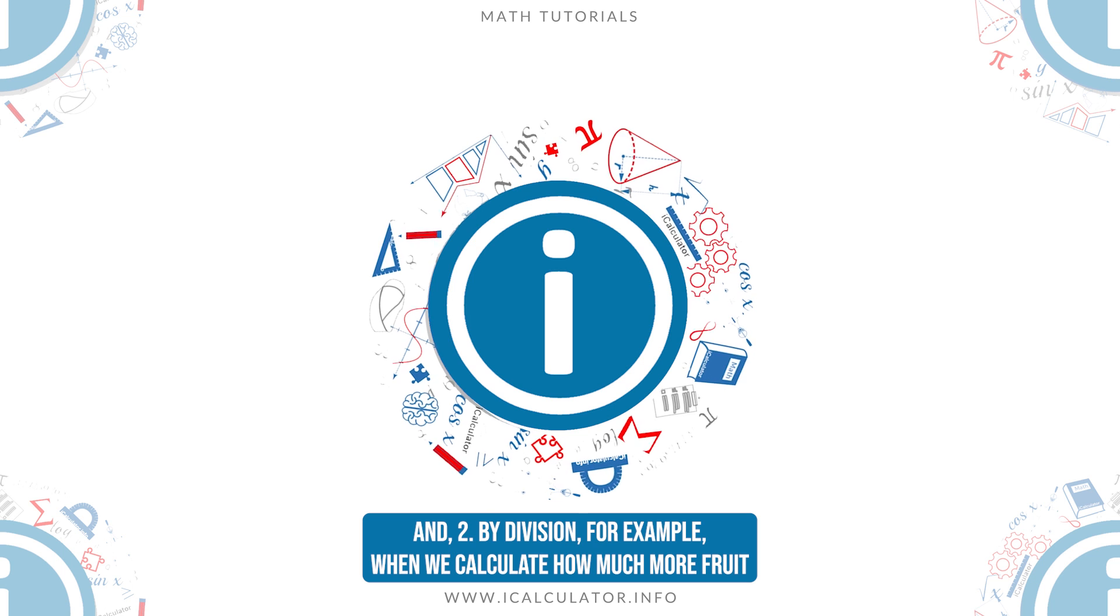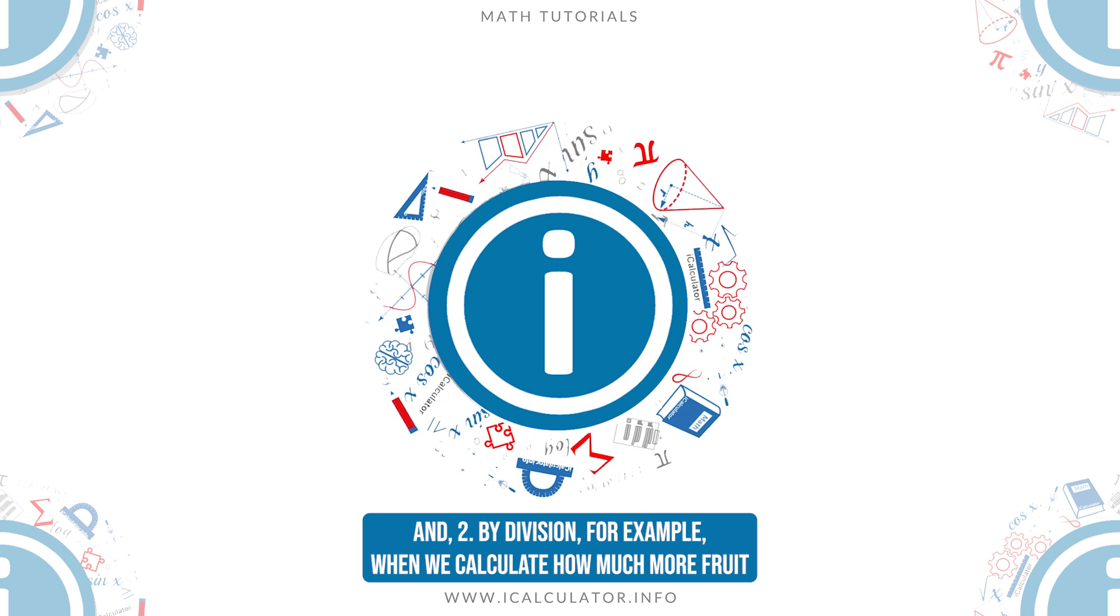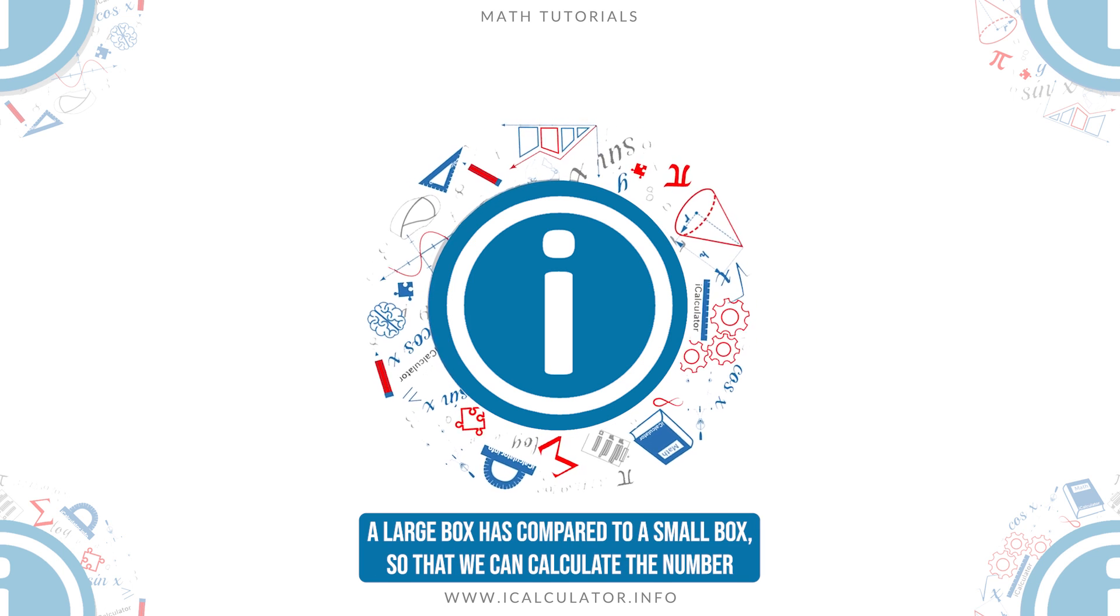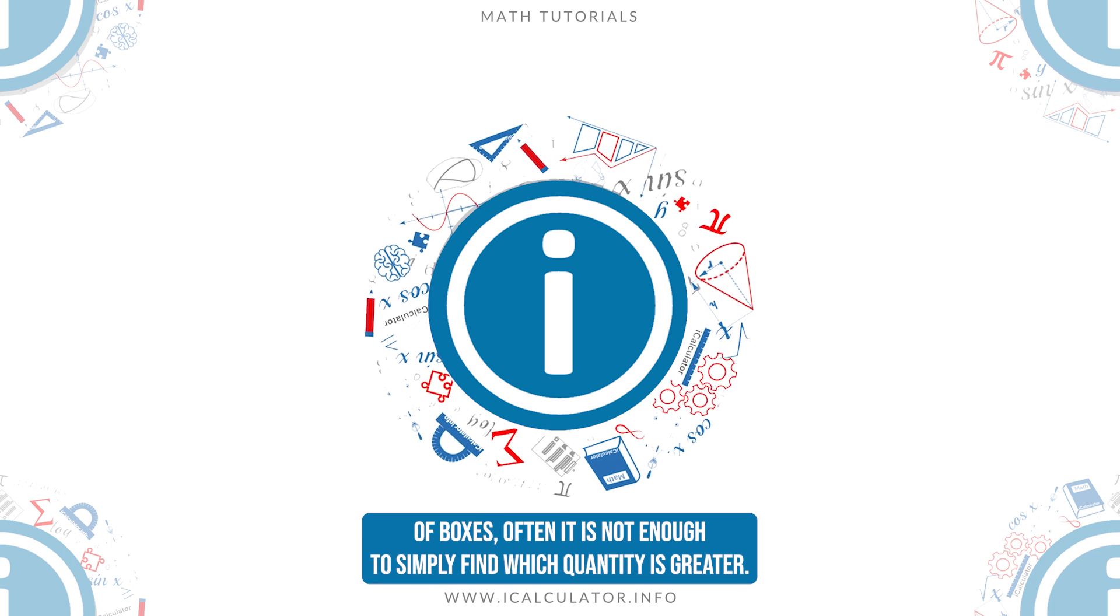and two, by division, for example, when we calculate how much more fruit a large box has compared to a small box, so that we can calculate the number of boxes.